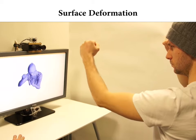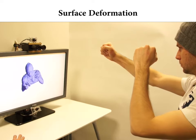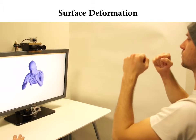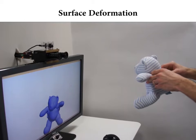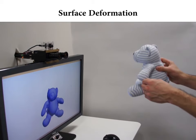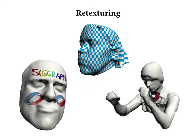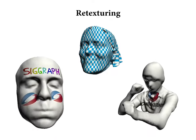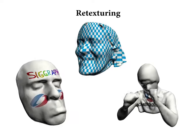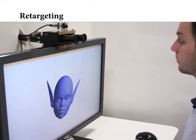We explored the applicability of our approach to a variety of different scenarios. Our approach allows for retexturing of captured surfaces. Our deformation regularization prevents geometric drift, which keeps texturing locally stable. As we capture deformations, we can easily re-target the non-rigid motion to other meshes. Here is a live demo where we transfer facial expressions.